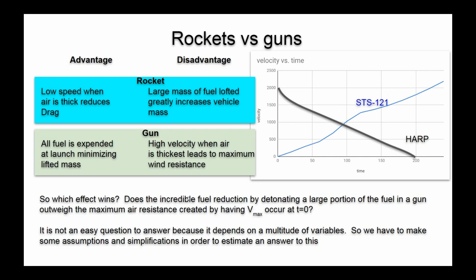The advantage to rockets is the speed is very low when the air is thick and this reduces drag, but the rocket has to haul huge amounts of fuel with it. The gun on the other hand expends all the fuel on the launch pad, but it leaves at maximum velocity, subjecting it to the greatest wind drag. So there's going to be an optimal solution. It won't be easy to find because there are so many variables involved in the design of a rocket or of a shell. So I'm going to have to make some estimations and some assumptions to make a reasonable projection at what can and can't be done with this method.